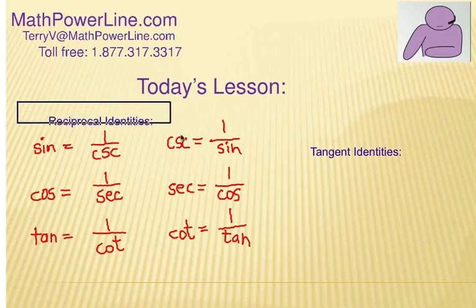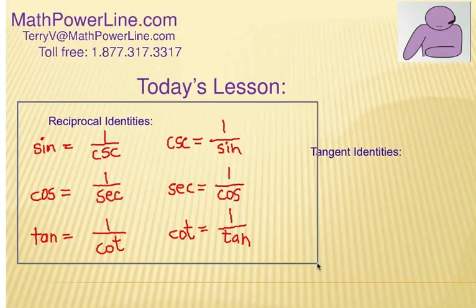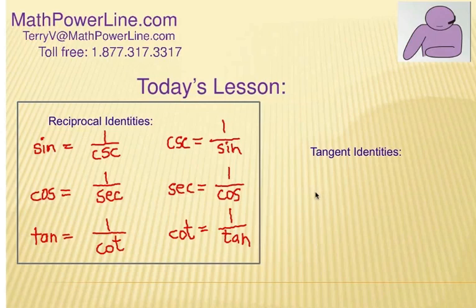And the cotangent function is a reciprocal of the tangent function. And there we go. Those are called the reciprocal identities.